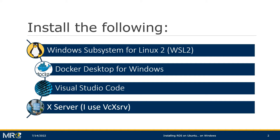And then if you want to run GUI programs — that's graphical user interface programs — you're going to also need an X server. X server is what Linux has been using to render programs to the screen. So if you're on Windows 10, you're going to need to get VcXsrv.